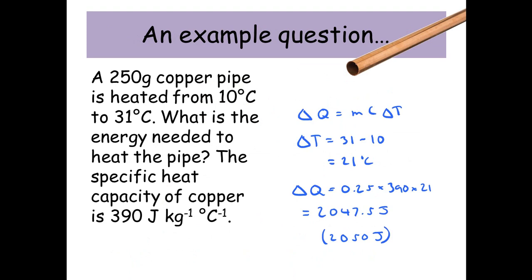We're going to use our delta Q equals m c delta T equation. First, let's find the change in temperature. We're going from 10 degrees to 31 degrees. When you work out a change, you do the final condition minus the initial condition. So 31 minus 10 gives you 21 degrees.